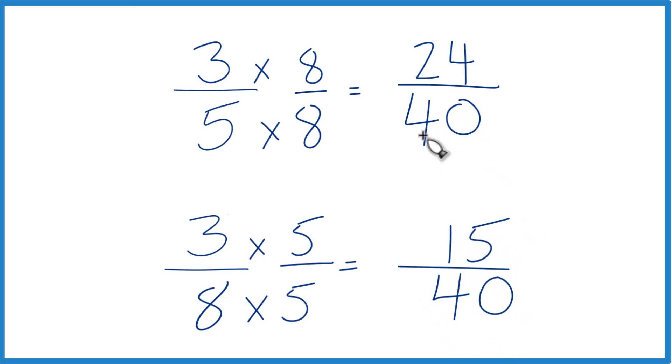Same denominator, we can see that 24, that's greater than 15. So 24 fortieths is greater than 15 fortieths. Since these here are equivalent, three-fifths, that's larger than three-eighths.